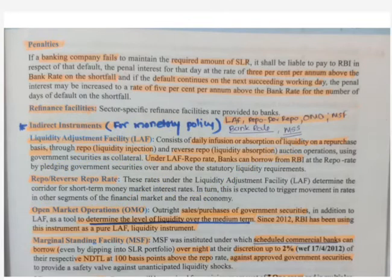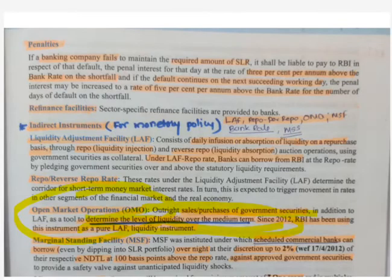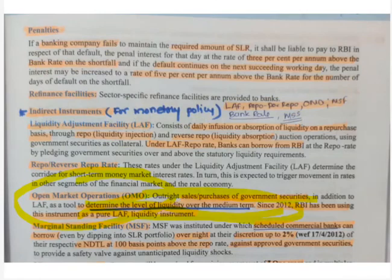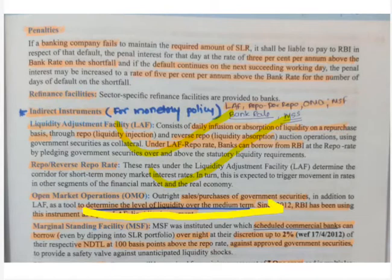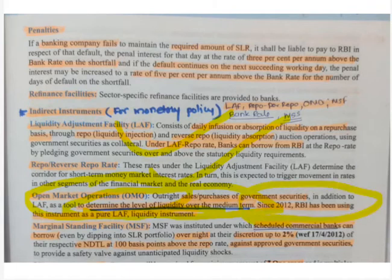Next indirect instrument is Open Market Operation (OMO): outright sales and purchase of government securities, in addition to LAF. It is used to determine the level of liquidity over the medium term. Repo rate and reverse repo rate are used for very short-term purposes, but for medium-term liquidity you use OMO. Since 2012, RBI has been using this instrument as a pure LAF liquidity instrument. So for medium-term liquidity adjustment, OMO should be used.